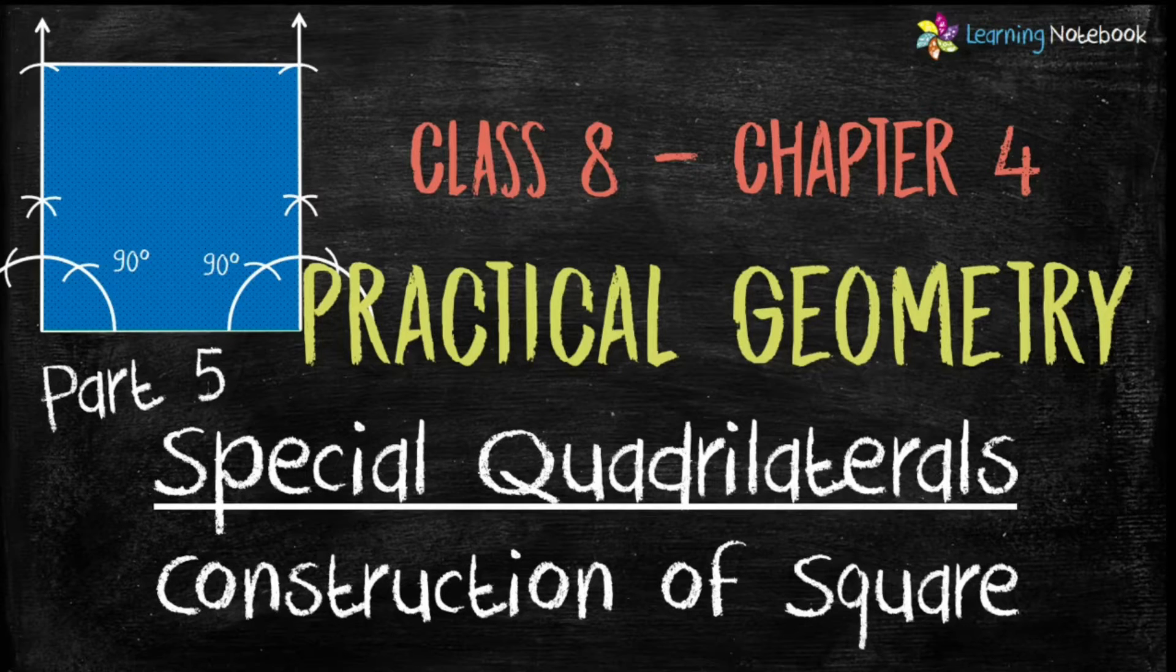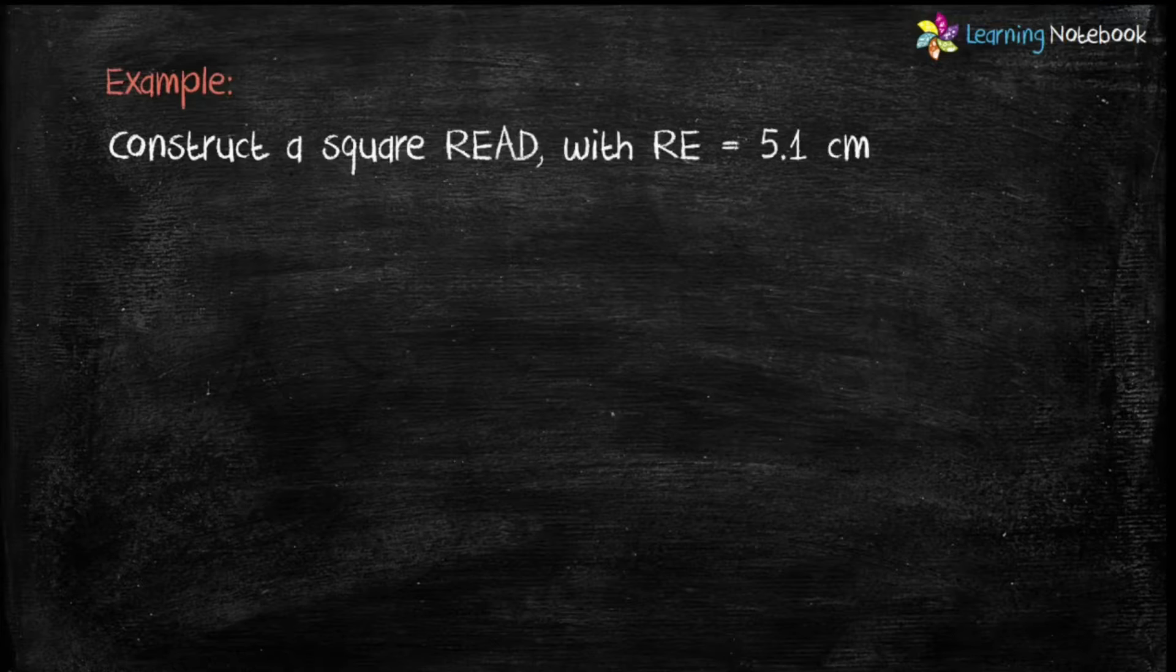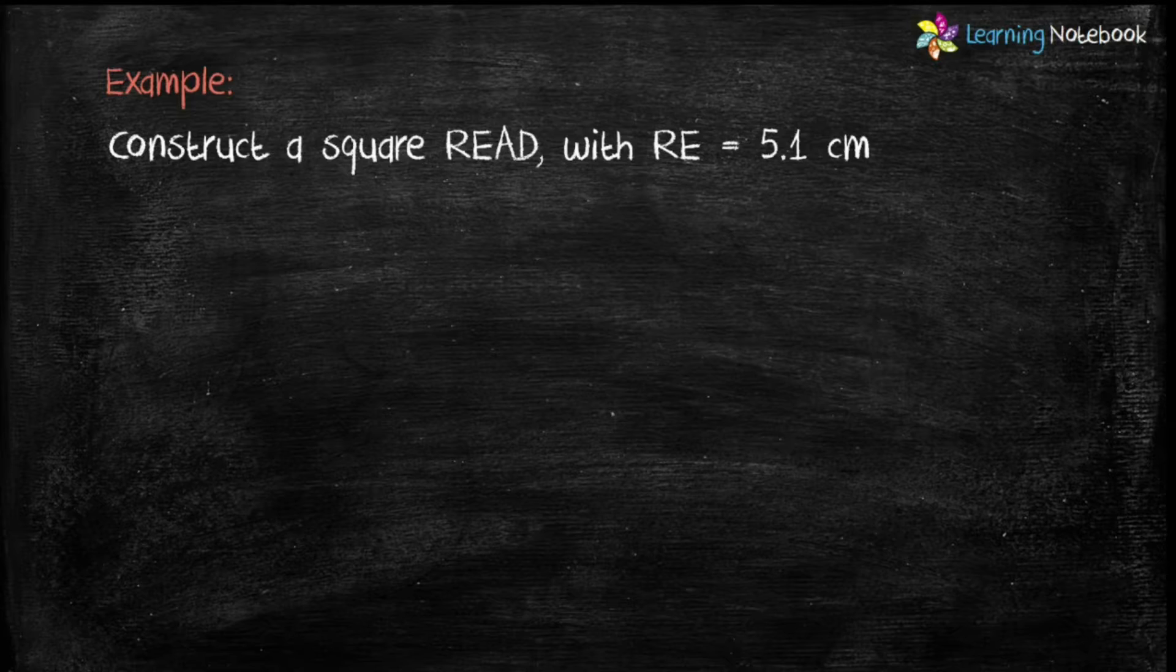In this part 5, let's learn construction of one of the special quadrilaterals, square. The question is, construct a square READ with RE equals to 5.1 cm. So here, we have to construct a square with one side.